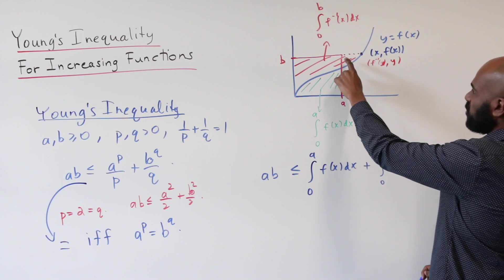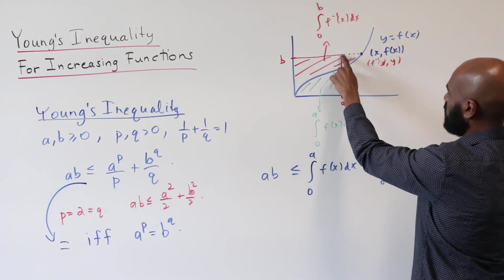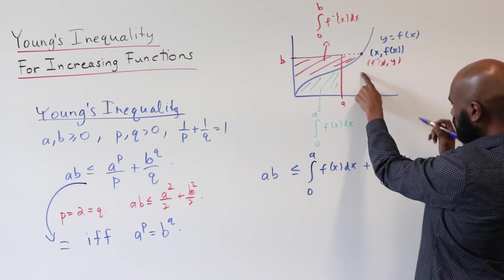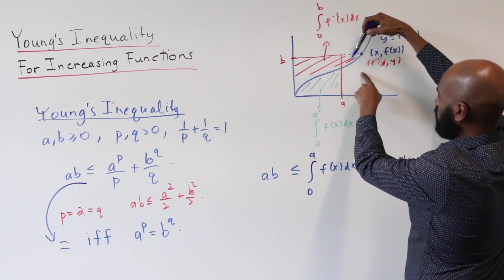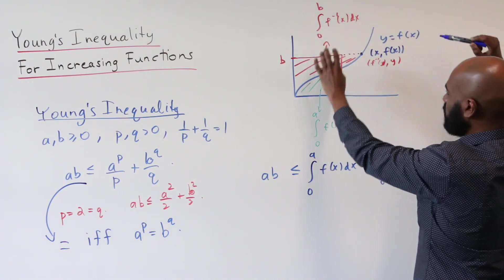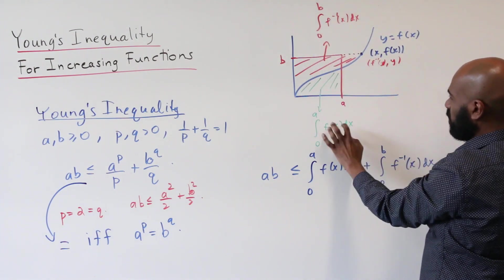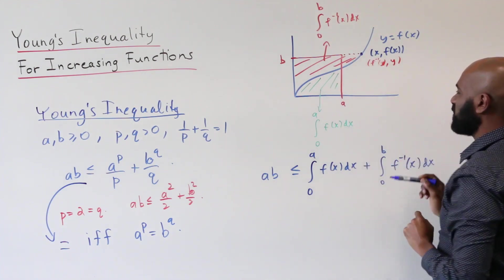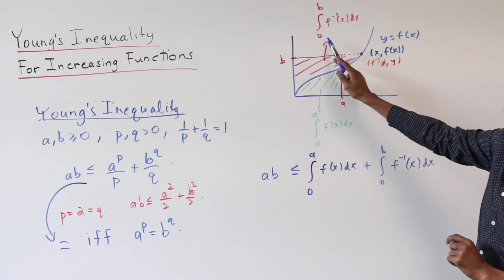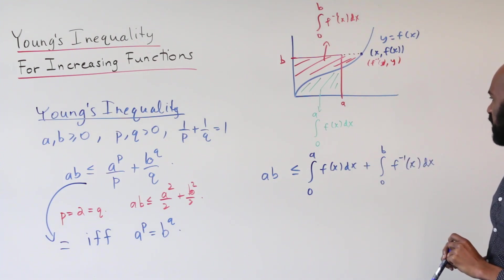We could have had a situation where this point was over here, we would get the integral from 0 to B of the inverse, and the integral from 0 to A would be the piece that would have a little bit more excess, like the one from the integral from 0 to B had in this case.